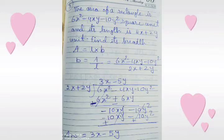We multiply 2x plus 2y with minus 5 and get minus 10xy minus 10y squared. After changing the sign, both terms are cancelled and the answer is 3x minus 5y.